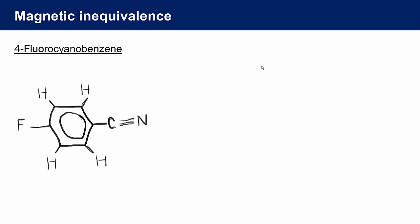Okay, so that was pretty straightforward. Let's take another example. If we consider the very simple organic molecule 4-fluorocyanobenzene, here it is. It's a planar, rigid molecule.